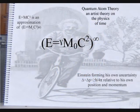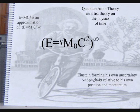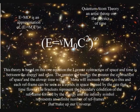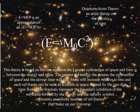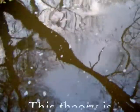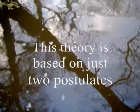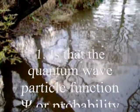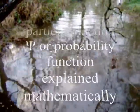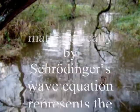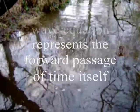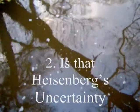The brackets represent the boundary condition of the reference frame formed by the energy, and the infinity symbol represents an infinite number of reference frames that make up our universe. In this way we link the time dilation of Einstein's theories on relativity with a deeper understanding of quantum mechanics to give us an objective understanding of our universe. The theory is based on two simple postulates: the first is that the quantum wave-particle function of quantum mechanics represents the forward passage of time itself, photon by photon; and the second is that Heisenberg's uncertainty principle is the same uncertainty we have with any future event within our own reference frame.